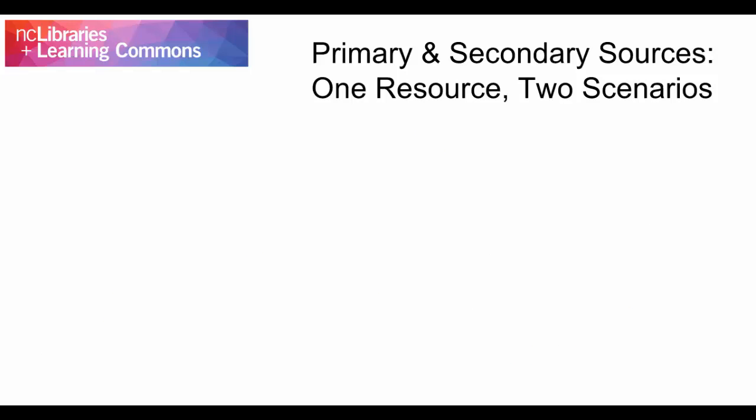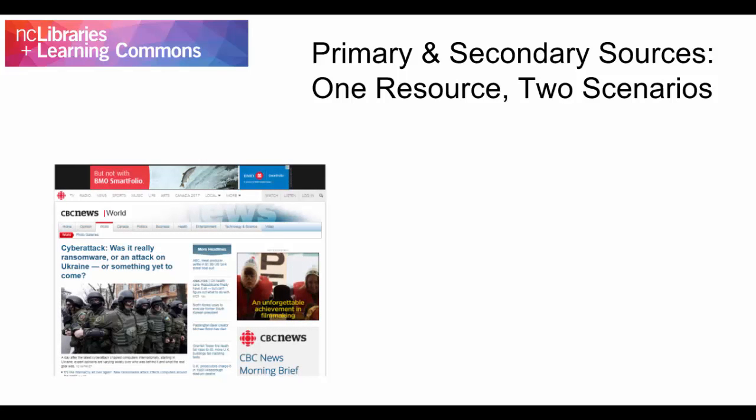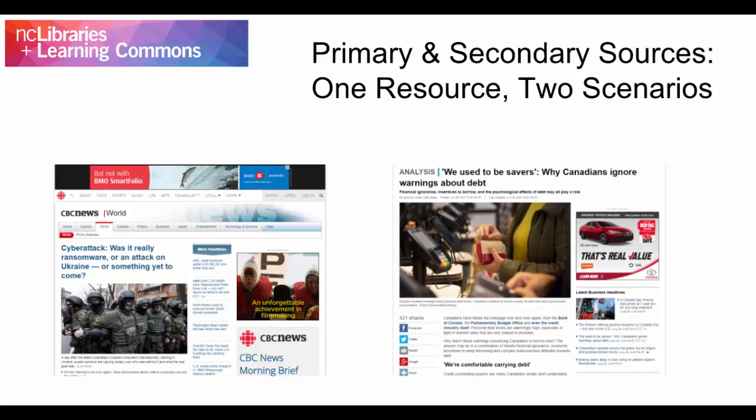A source's classification as primary or secondary can change depending on the topic that you are studying. For example, if you are writing about how news is represented on the internet, a news site like cbc.ca could be considered a primary source since cbc.ca represents the object that you are studying. However, if you are writing about consumer debt in Canada and you find an article on cbc.ca that analyzes it, the article would be considered a secondary source since that article is a step removed from your topic.